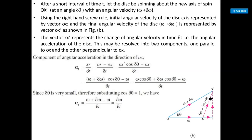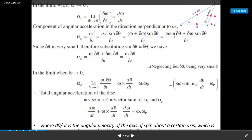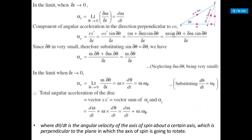The radial component of acceleration RX-dash can be evaluated as OX-dash × sin(omega + delta omega) divided by delta t. In the limit as delta t tends to 0, the tangential component of acceleration becomes limit of delta omega / delta t as delta t → 0, which equals d omega / dt. The angular acceleration perpendicular to OX — the radial component — is alpha_c = RX-dash / delta t.